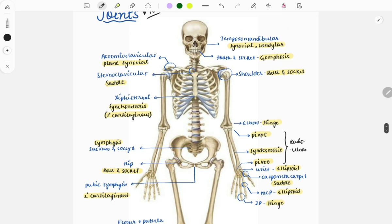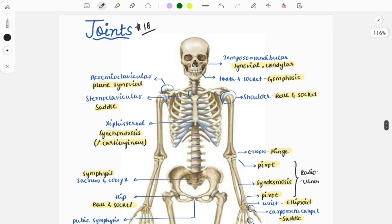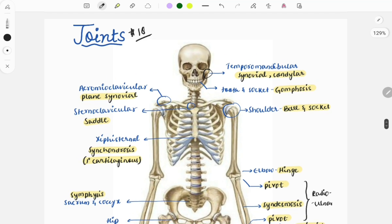If an image-based question is asked, you will be solving it easily. So let's start. Here you can see the joint present between the mandible and the temporal bone.